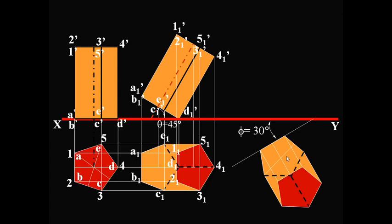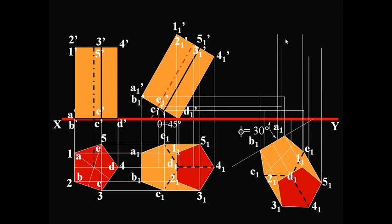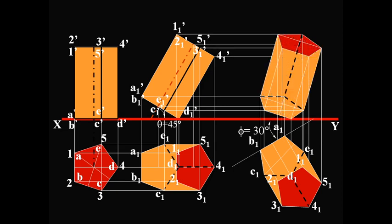While doing so, we observe that the top base 1, 2, 3, 4, 5 is nearer to the observer than the base. So it will be seen in the final front view. Draw the vertical and horizontal connectors. And yes, as can be seen, the top base 1, 2, 3, 4, 5 is clearly visible in the final front view, whereas the base ABCDE is not.